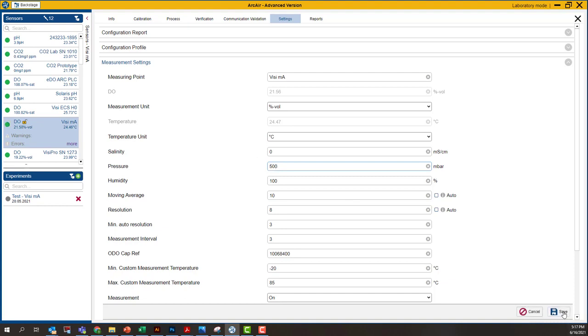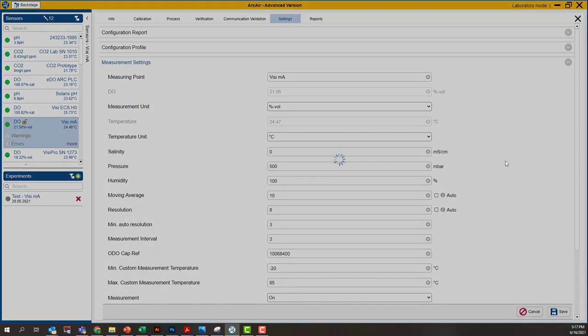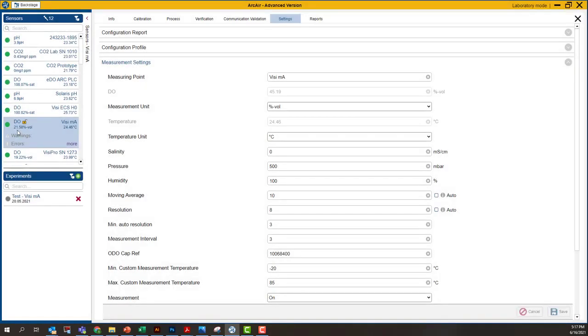So I'm going to click Save here. Over on the left, I can actually see the value that my sensor's reading here. And what I noticed is after I made that change, wow, my value doubled.